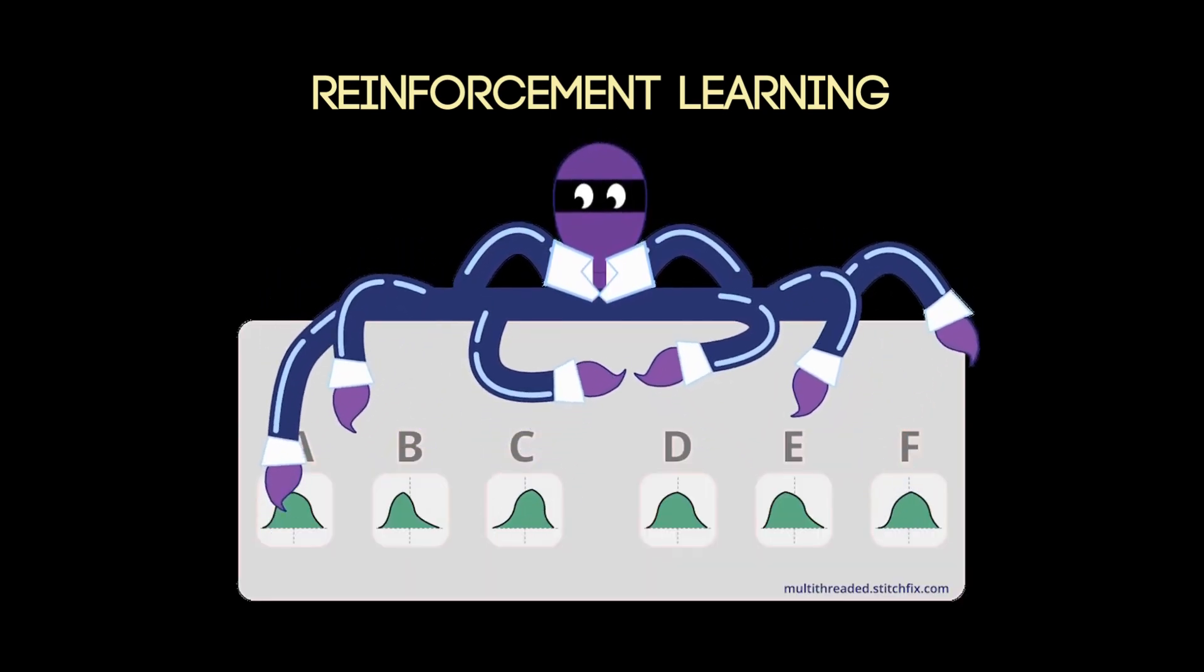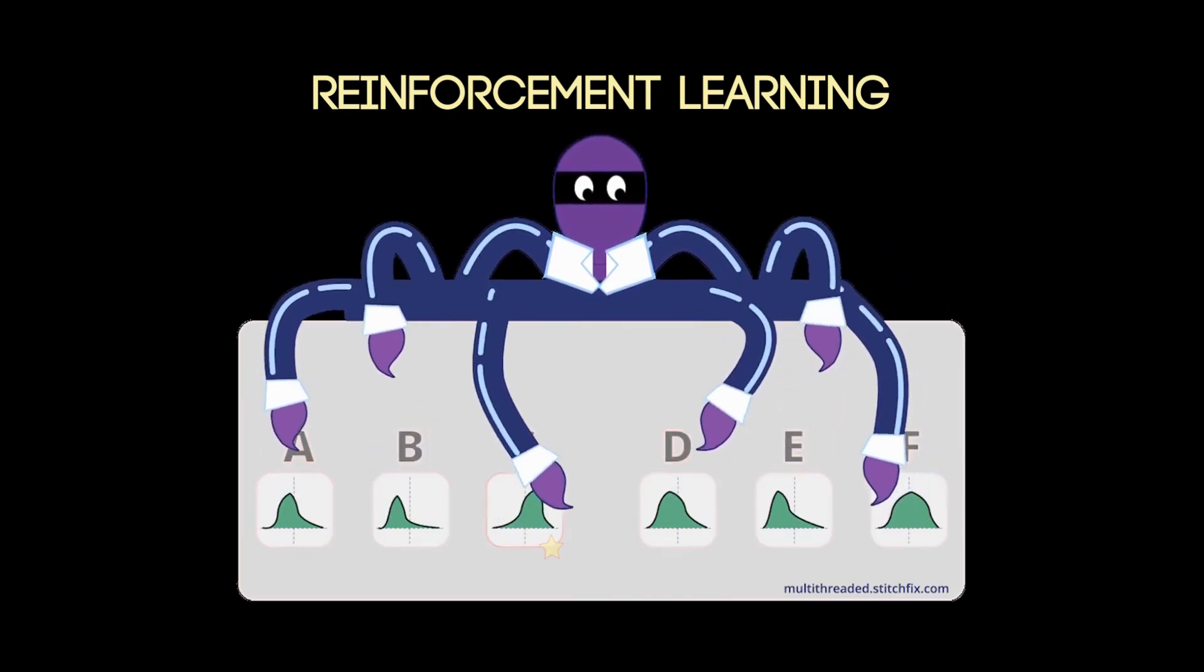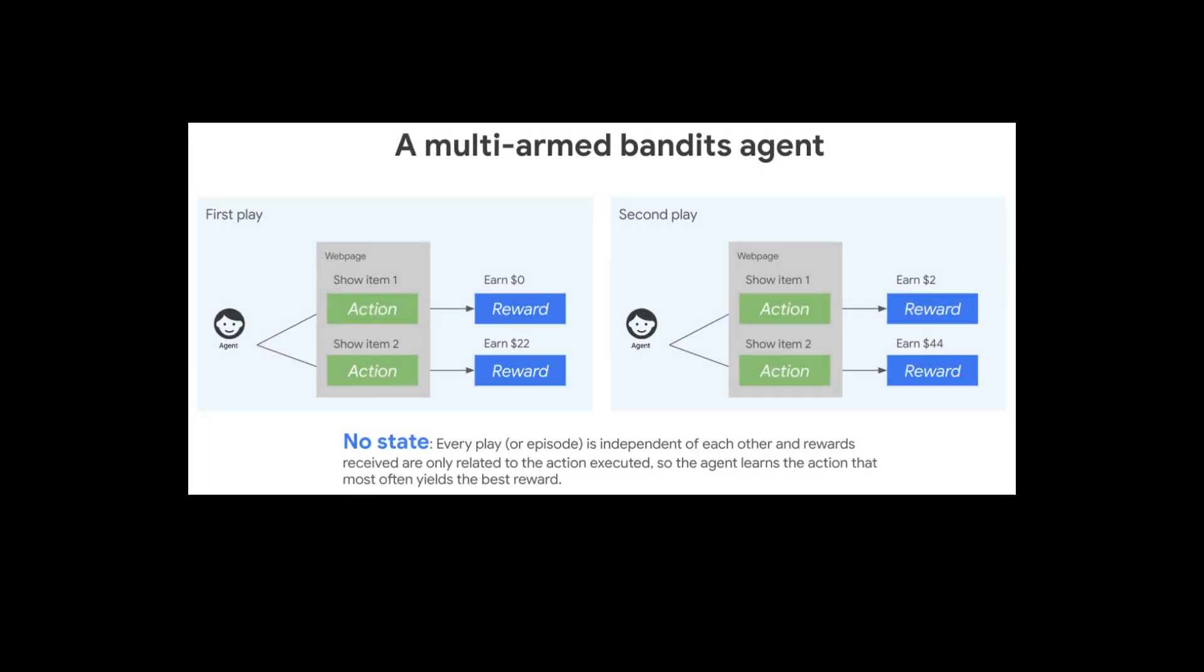The multi-armed bandit problem is a famous reinforcement learning challenge. It helps businesses, advertisers, and even healthcare professionals to make better decisions with limited information. In simple terms, the goal is to maximize the rewards.